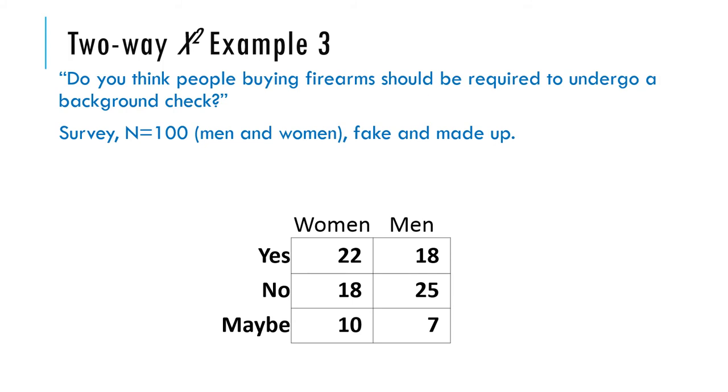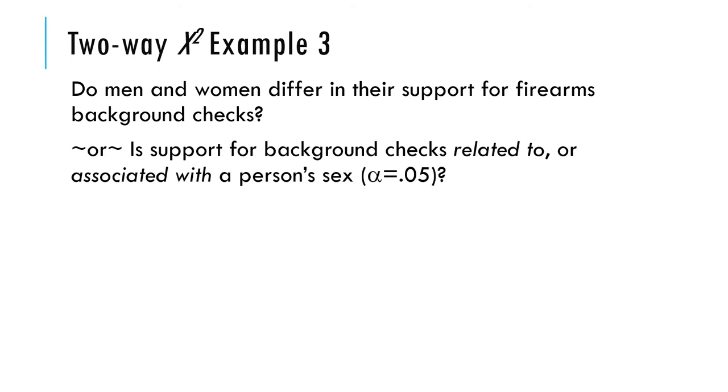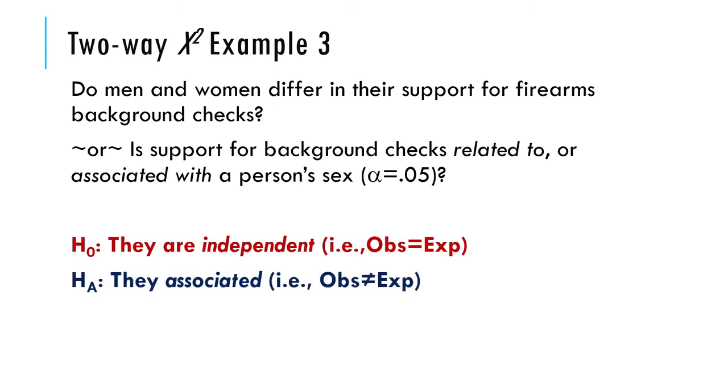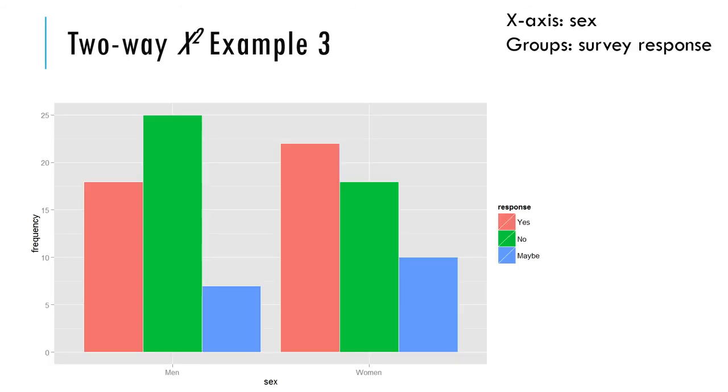Figure it out both ways just to be sure, it's probably 0.05 though. Then come back and watch the rest of the video. I'm going to move on. The null hypothesis is that these two variables are independent. Support for background checks is independent of sex. The alternative hypothesis is that it's not independent, there's an association between sex and support for background checks.